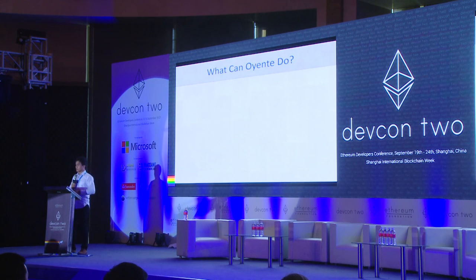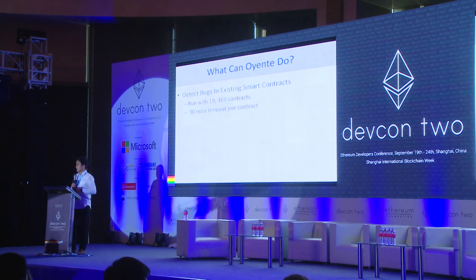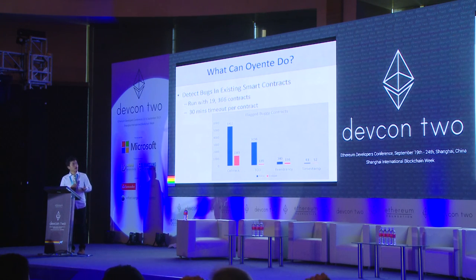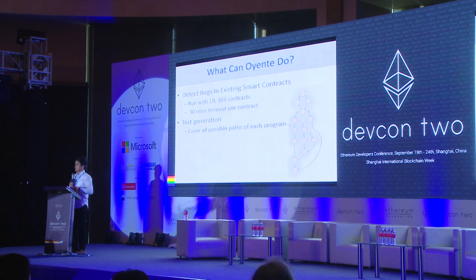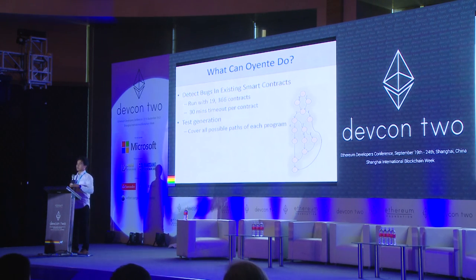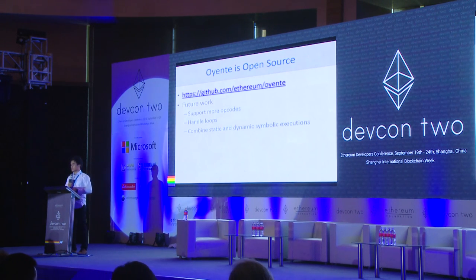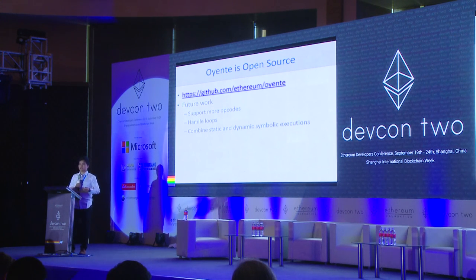What can Oyente do? Oyente can detect bugs in existing smart contracts as described. We ran it on almost 20,000 smart contracts back in May 2016 and were able to detect all the popular bugs at that time — this slide shows the number of bugs for each category. Second, Oyente can be used for test generation, because symbolic execution allows us to cover all possible execution paths and generate an input example that drives the smart contract to each specific path. Oyente is also open source — we just released it two days ago, and you can go to the GitHub repo to clone, fork, and contribute to the project.